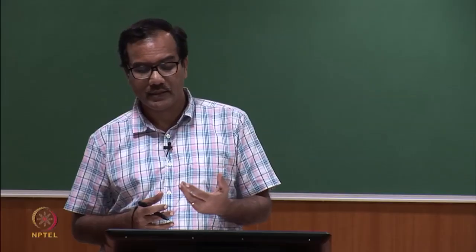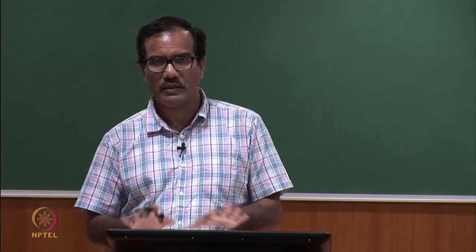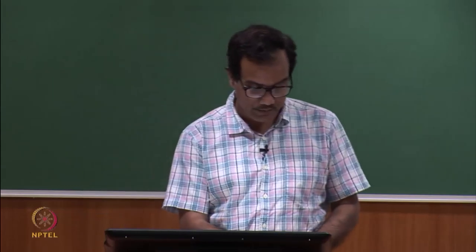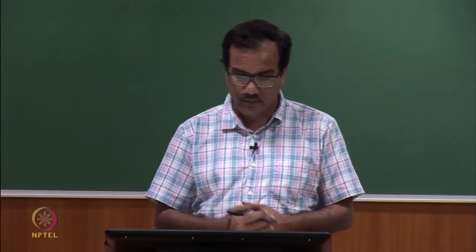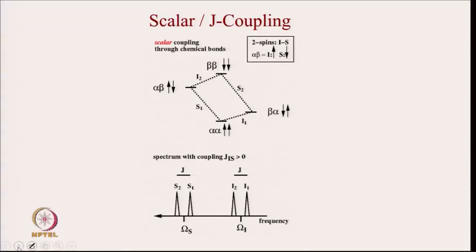There is another characteristic: the splitting of signals, which I will also discuss. This ensures the spectrum is correctly assigned. The fourth feature is that NMR signals split in the presence of neighboring protons, explained by scalar J coupling. If two spins are adjacent to each other, they will split each other's signals.